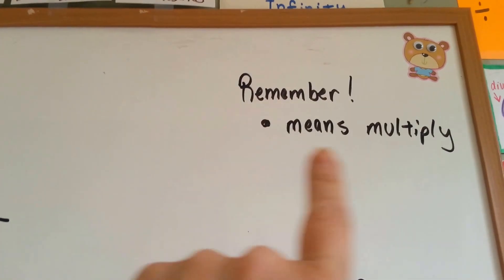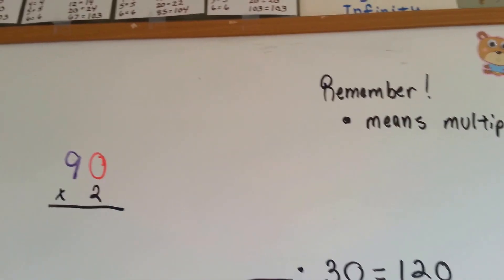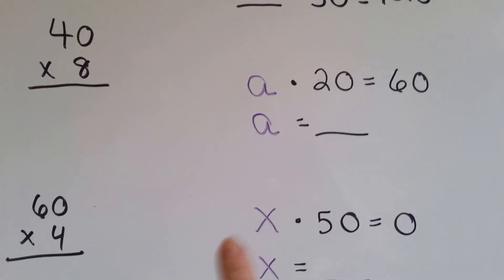Now the first thing I want you to remember is that a dot means multiply. Because sometimes when you're using a variable, like an alphabet, the x can confuse you. So we're going to use a dot.